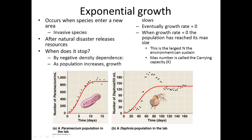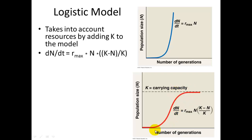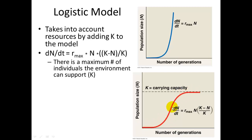Exponential growth usually stops when the population reaches its maximum size, called the carrying capacity, represented by uppercase K. If you use this in a growth model, it's called the logistic model, which takes into account carrying capacity and produces a different, S-shaped curve. The equation uses r-max and N, but multiplied by (K minus N) divided by K. As the population gets closer to K, this rate decreases more and more until it reaches zero.